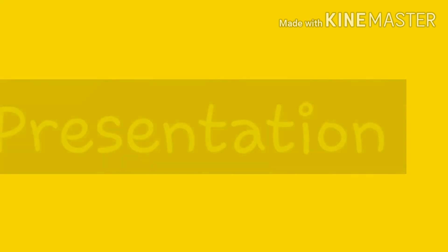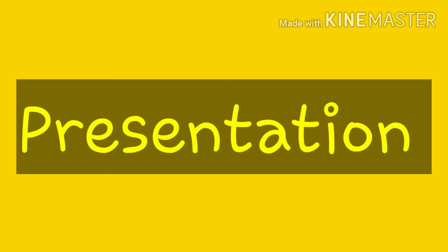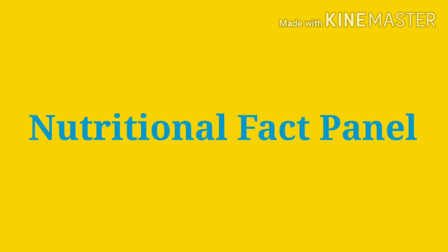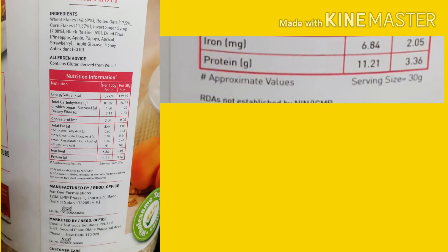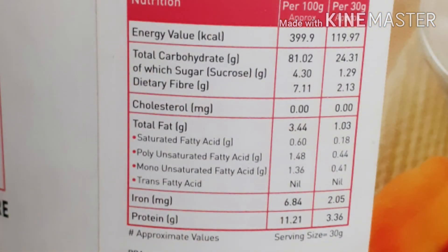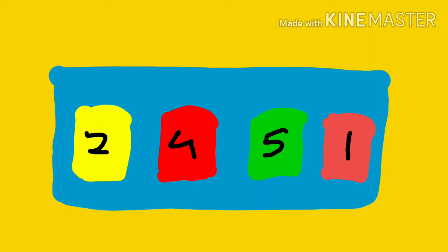Once we are done with the determination of nutritional content, another important step is the presentation. There are two formats: the nutritional fact panel and the graphical nutritional panel. The nutritional fact panel is present on the back side and contains information such as serving size, amount of calories, percentage daily value, and food notes with daily values. The graphical nutritional panel is present on the front side of the packet and is common in European countries, but it has not been implemented in India yet.